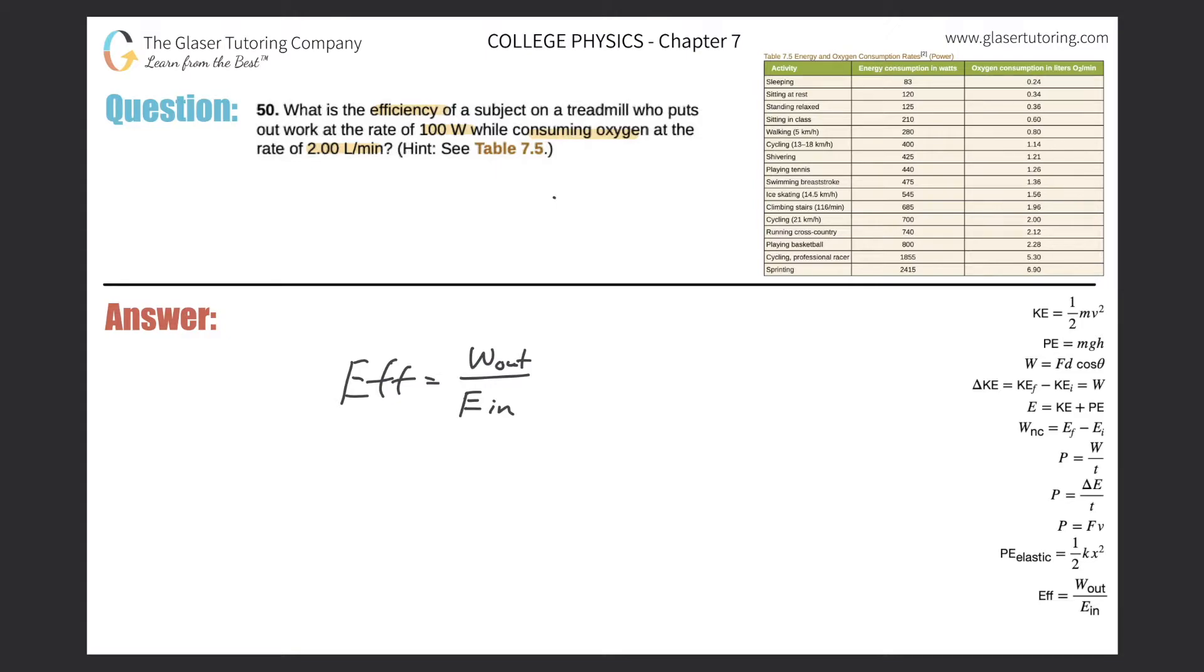So they're telling us specifically they're putting, puts out work at the rate of 100 watts. So I know this part in the numerator. So the efficiency here will be 100 watts divided by now the denominator value, so the energy put in.